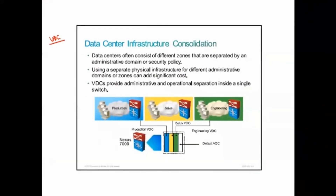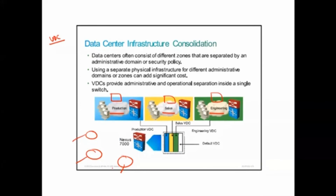VDC came into the picture for scenarios where a company has multiple departments — production, sales, engineering — each needing a separate switch. When more departments are added, instead of buying new Nexus boxes, VDC allows you to create virtual switches within a single box, allocate them to different departments, and create additional VDCs as needed.